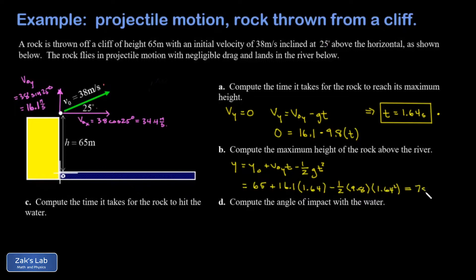In part C we're looking for the time it takes for the rock to hit the water. So this time our final y position is going to be zero, and we're plugging into this same vertical position function: y = y₀ + v₀ᵧt - ½gt². And our initial height is 65, our initial y velocity is about 16.1, the time is unknown now.